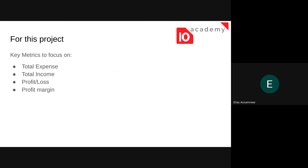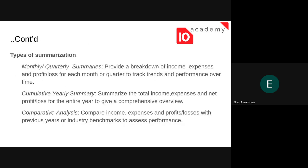For key metrics — for example for these projects — it might be total expense, total income, profit/loss, and profit margin. Generally, there are a lot of types of summarization. Monthly and quarterly summaries provide a breakdown of income, expense, or profit for each month or quarter. A yearly summary summarizes the total income, expense, and net profit for an entire year and may give a comprehensive overview. Comparative analysis compares income with expense and can be used for profit or loss calculation.